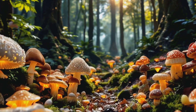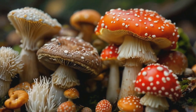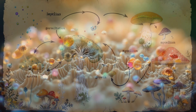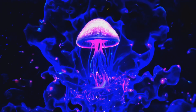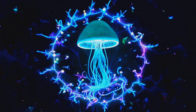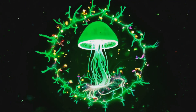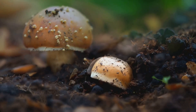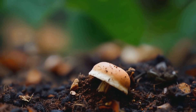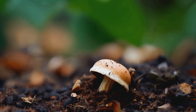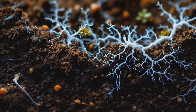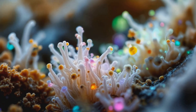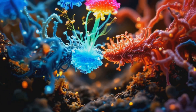Fungi have unique life cycles that alternate between vegetative and reproductive phases. When a spore lands in a favorable environment, it germinates, growing hyphae. The mycelium spreads throughout the substrate, breaking down organic matter and absorbing nutrients. In sexual reproduction, compatible mycelia fuse, exchanging genetic material. Environmental signals then encourage the mycelium to form fruiting bodies, which grow rapidly and release spores. The cycle repeats as spores find new substrates to colonize.